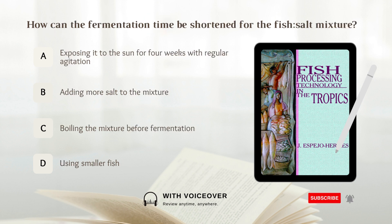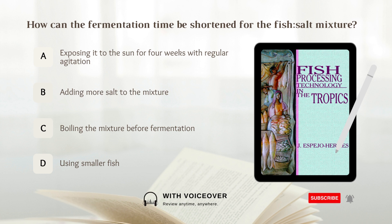How can the fermentation time be shortened for the fish-salt mixture? A) Exposing it to the sun for four weeks with regular agitation. B) Adding more salt to the mixture. C) Boiling the mixture before fermentation. D) Using smaller fish.